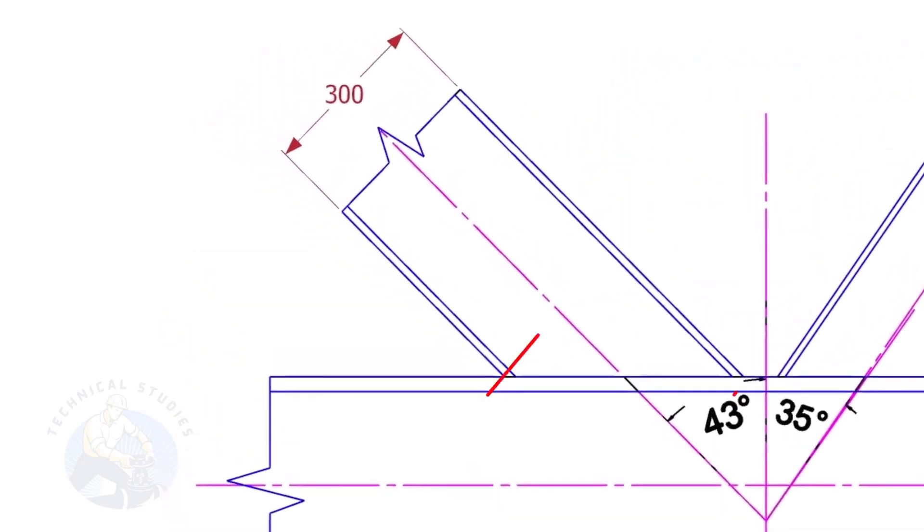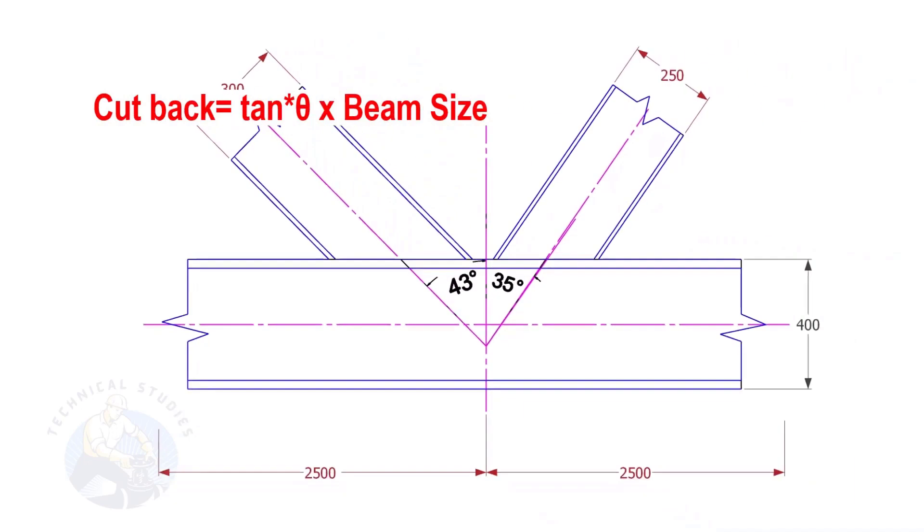Let us calculate the cutback of this beam. The formula to calculate the cutback is tan degree multiplied by the size of the beam.